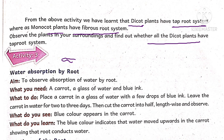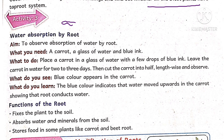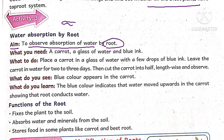Now, water absorption by root. The aim of this activity is to observe the absorption of water by roots. What do you need? A carrot, a glass of water, and blue ink. Carrot is a vegetable and it is a part of the root, that's why we are using it here.